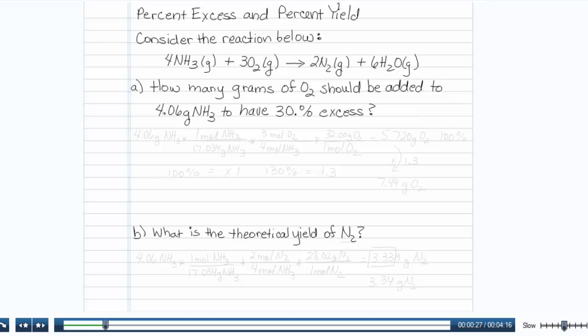The way to solve this would be to say, what amount do I need to have exactly the right amount, or 100 percent of what I need, and then let's figure out how to have 30 percent more.